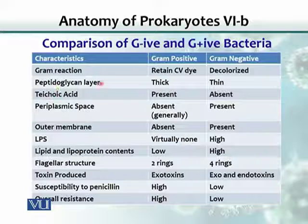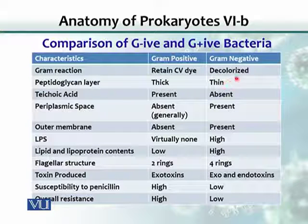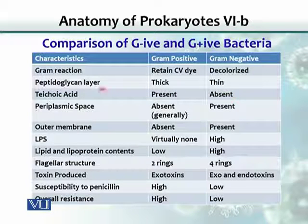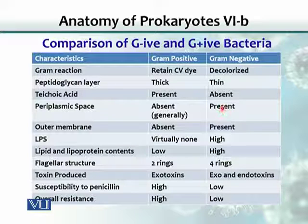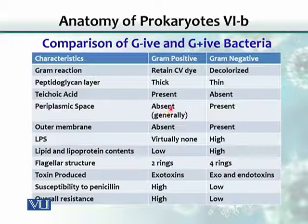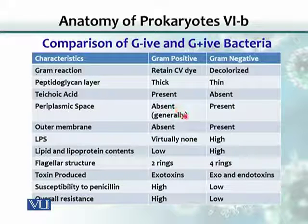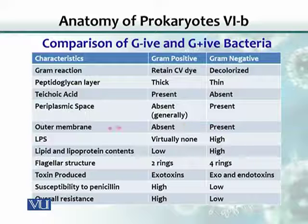As mentioned earlier, the peptidoglycan layer is much thicker in gram-positive and very thin in gram-negative bacteria. Teichoic acid is present in gram-positive bacteria but not in gram-negative. The periplasmic space is present in gram-negative bacteria because there are two membranes — inner and outer — with a space between them; it is generally absent in gram-positive. The outer membrane is not present in gram-positive bacteria but is present in gram-negative.